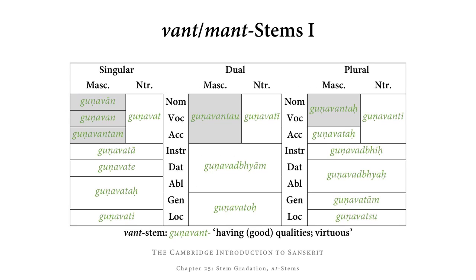Let's look at an entire want-stem paradigm. What we have here is the masculine and neuter forms of gunavant, meaning 'having good qualities' and therefore 'virtuous.' The feminine forms will come in a little while. The shaded fields contain the strong forms; all other fields contain weak forms. The strong forms are limited to the masculine: nominative, vocative, accusative singular; nominative, vocative, accusative dual; and only the nominative and vocative in the plural.